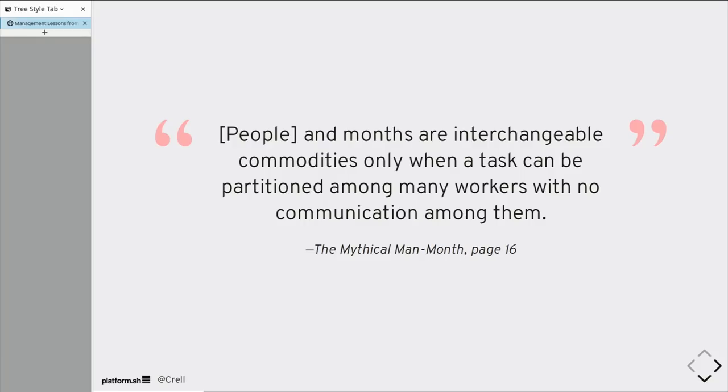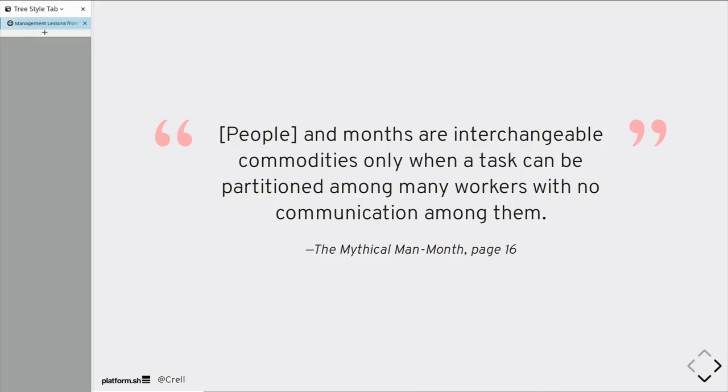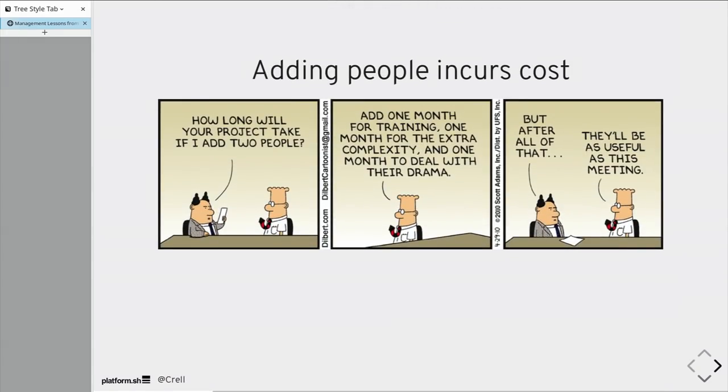People and months are interchangeable commodities only when a task can be partitioned among workers with no communication among them. If you have to talk to each other, the tasks are no longer parallelizable.